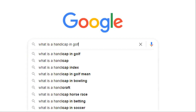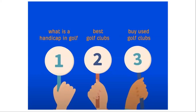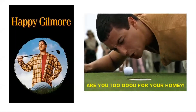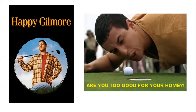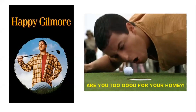A keyword like what is a handicap in golf would be really tough to organically recommend your products, but it's a way to attract relevant traffic to your site, so I give this a business value of 1. These would hold the lowest priority, and anything with a score of 0 is probably worth ignoring because it's not going to impact your business potential or the bottom line. Something like a Happy Gilmore review would have a business value of 0 because it has nothing to do with your business, other than the fact that it's a fantastic movie about golf.